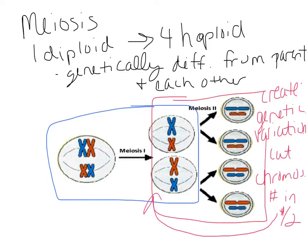We end up with those haploid cells through the two divisions. Meiosis I is where we get most of that genetic variation and cut the chromosome number in half — we go from double-stranded replicated chromosomes back to the normal 46. In meiosis I we're creating the genetic variation, crossing over will happen, and we cut the chromosome number in half. In humans there would be 92 replicated chromosomes, and we're cutting them back down to the regular 46.